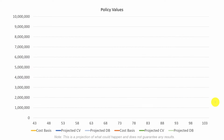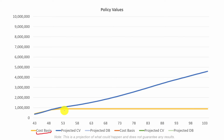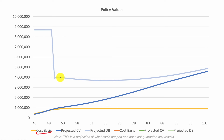Here is the 90-10 policy premiums graph — this is cumulative, so we call it cost basis — then we have the projected cash value, the blue line, and the death benefit. You can see that big drop in the death benefit. It starts growing a little, then we drop the premium entirely, and you can see this long period where the death benefit actually drops before it starts rising again.